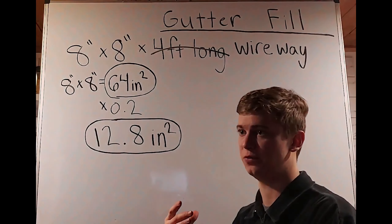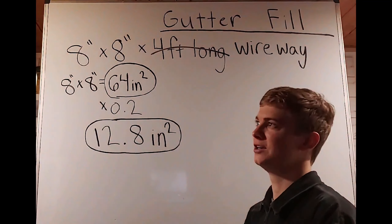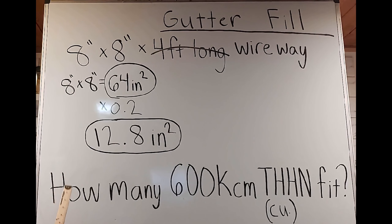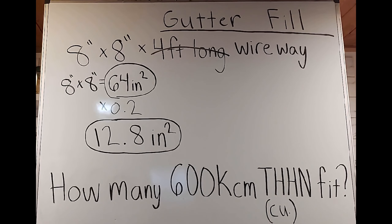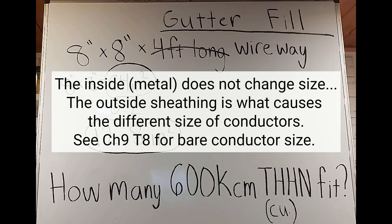The second part goes into what if we wanted to fill this with actual wires. How many 600 KCMIL THHN will fit in the 12.8 square inch space? This is copper. Oftentimes they'll mention copper or aluminum. When we know the wire type — THHN — and the size — 600 KCMIL — and we go into the table, we'll see it doesn't mention copper or aluminum, because the wire type already tells us what type of wire we're using. Aluminum and copper conductors of the same gauge can have the same square-inch area.